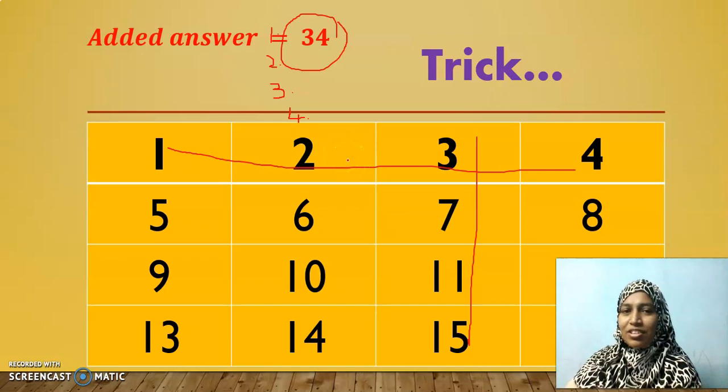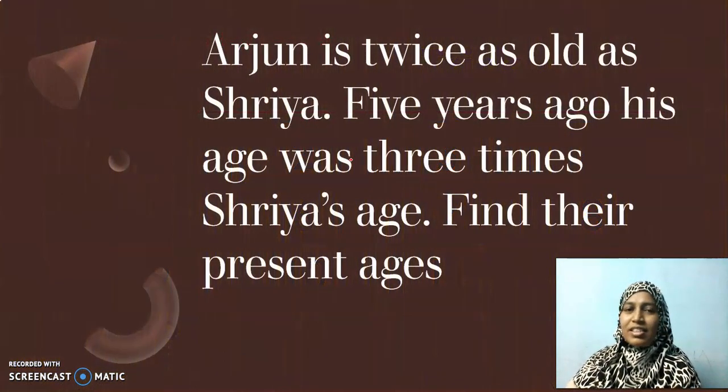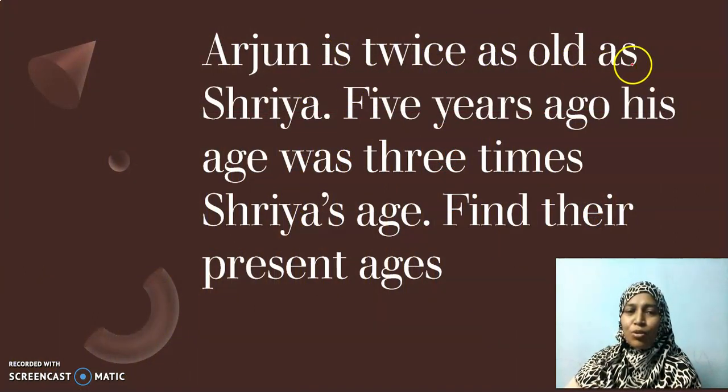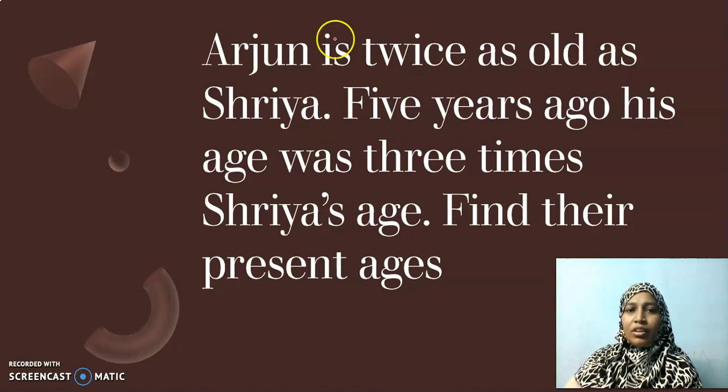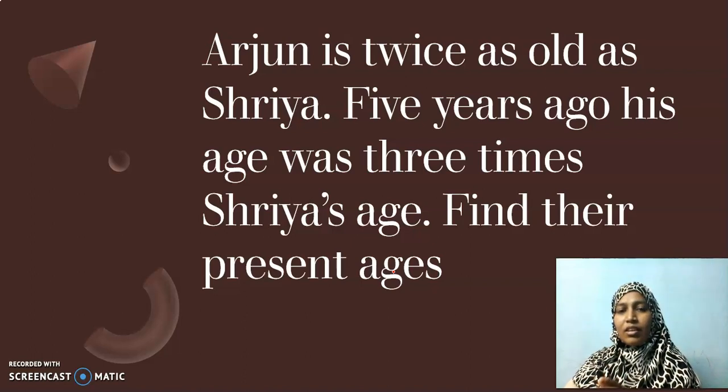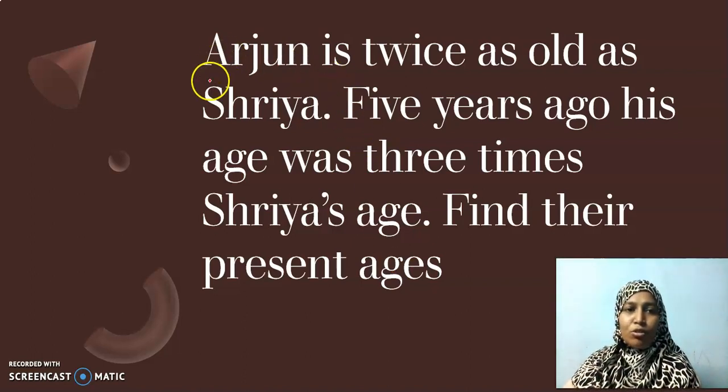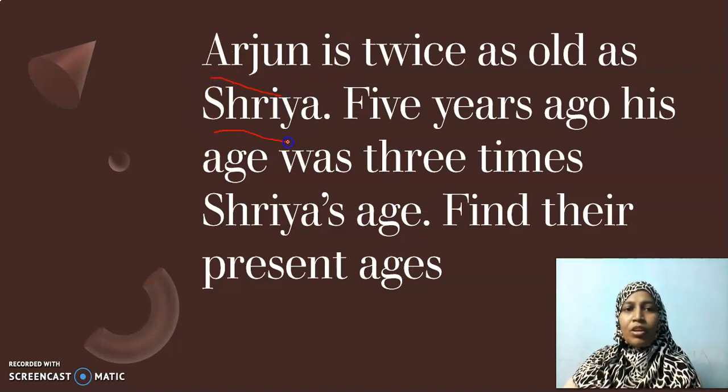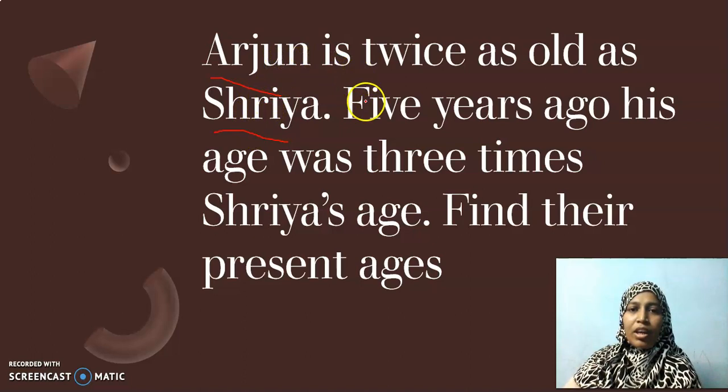Okay children, shall we get into today's session? The first question is: Arjun is twice as old as Shriya. Now, five years ago, his age was three times Shriya's age. Find their present age. Today, we are going to deal with all the application oriented problems which is about age. Now, here we have two names: Arjun and Shriya. Arjun is twice as old as Shriya. That is, Shriya is younger, Arjun is elder. And they have given five years ago also. I prefer, let us tabulate the given data in a table format.